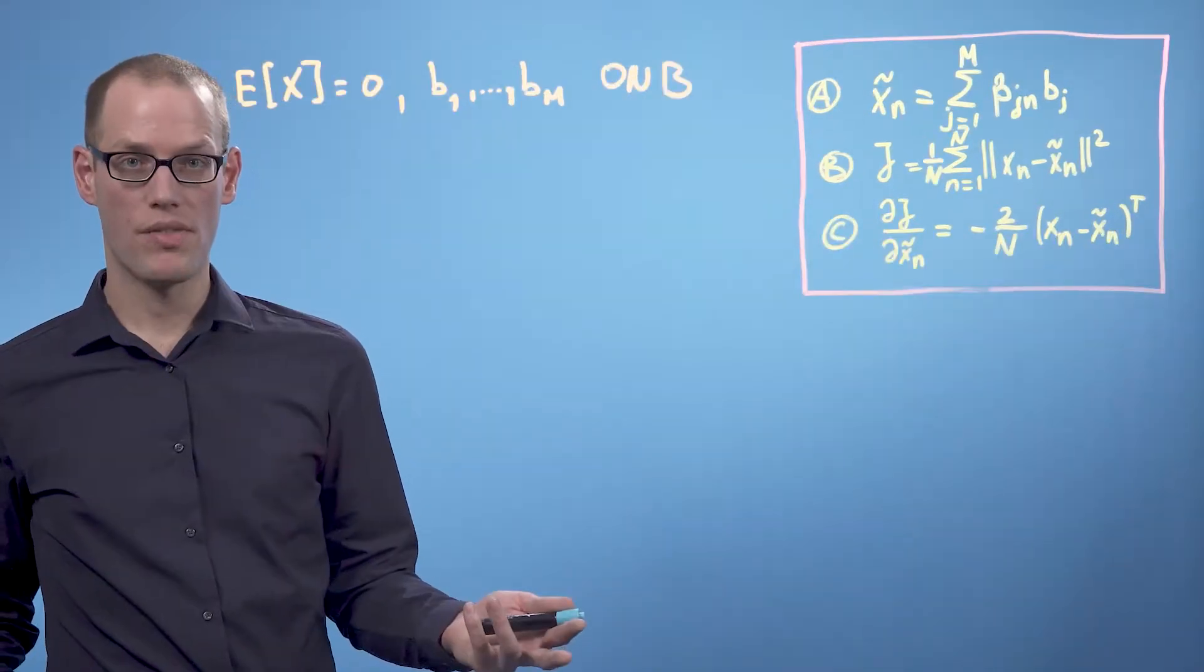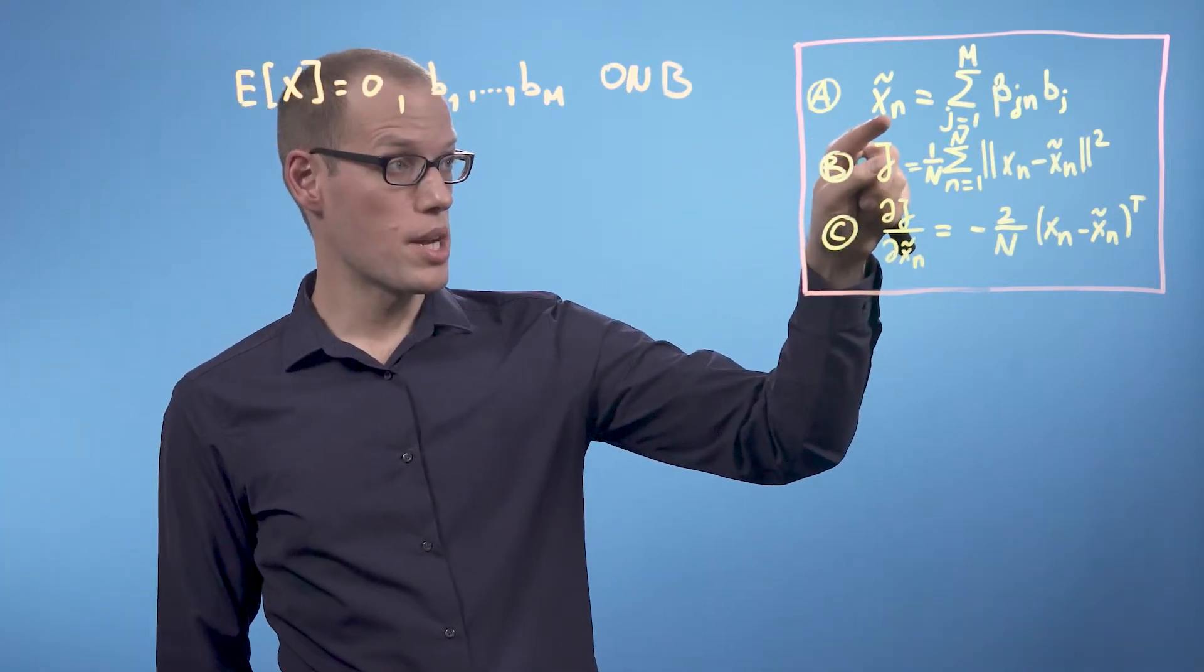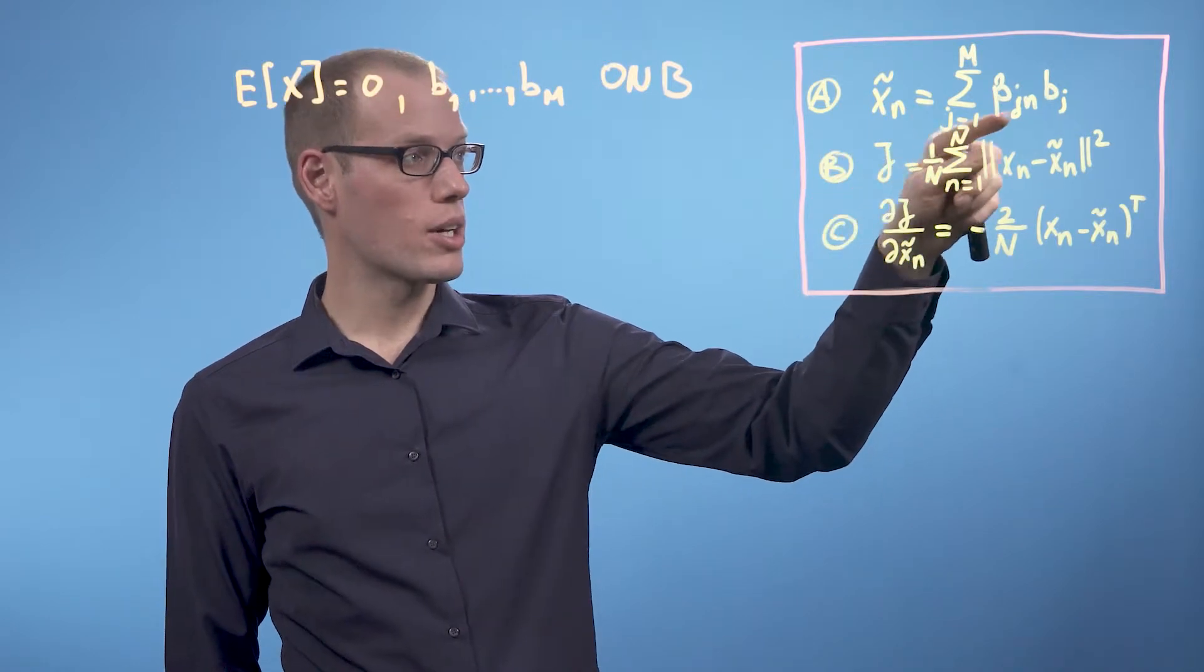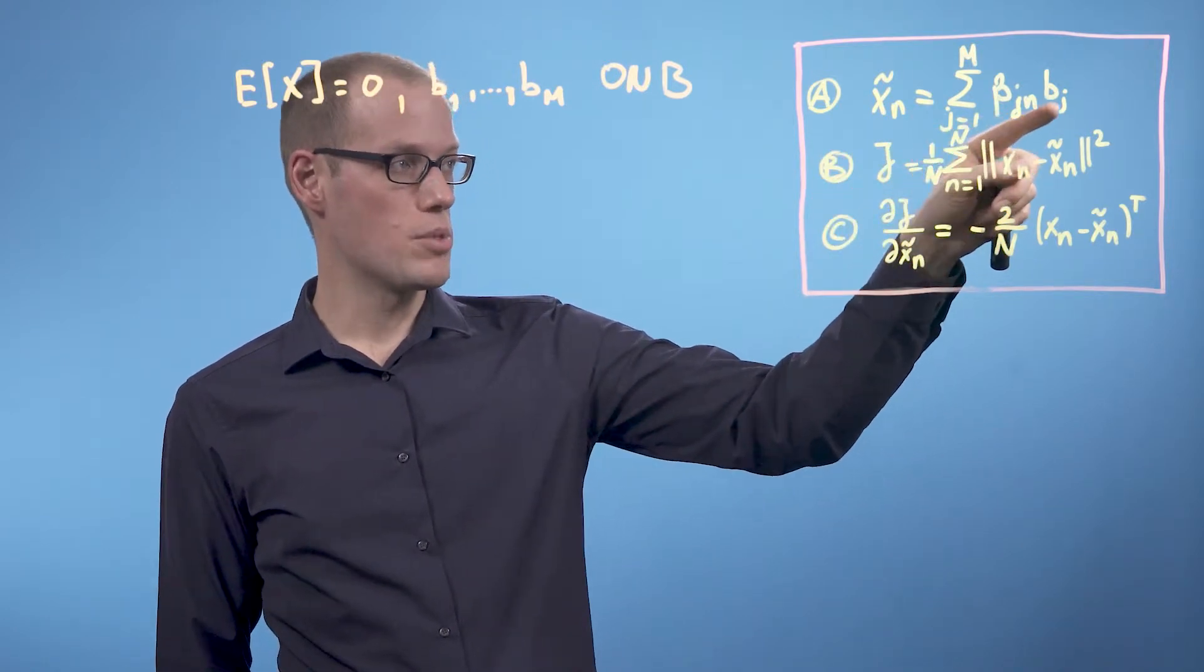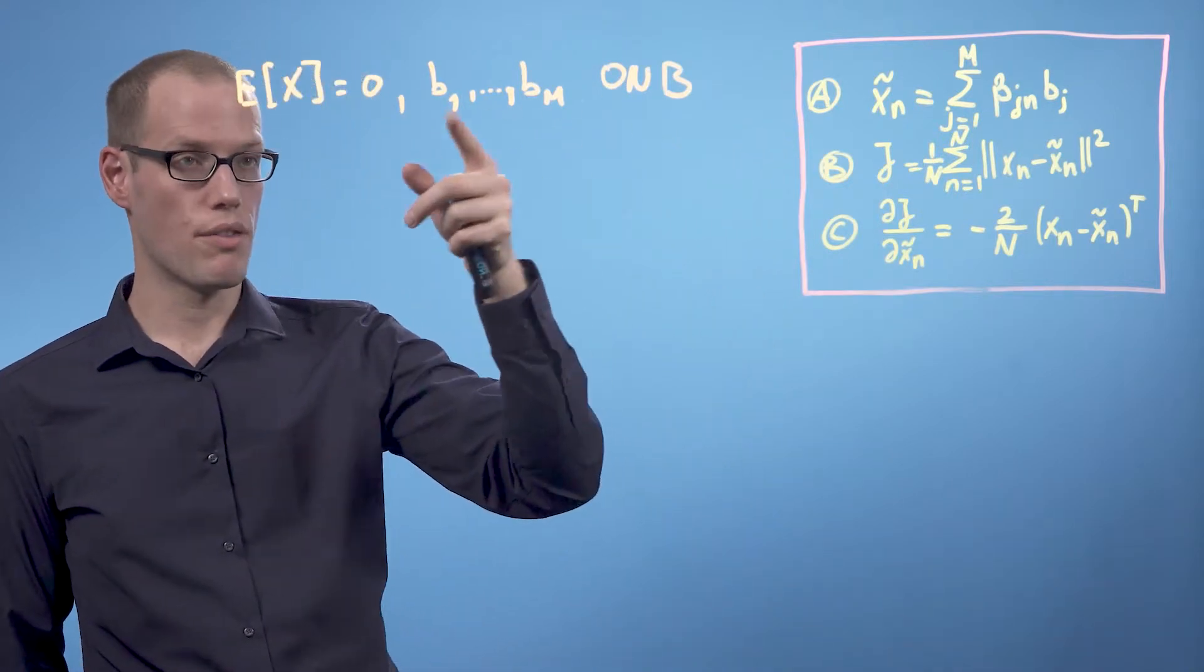From the previous video we carry over the following results. First we can write our projected data point xn tilde as a linear combination bjn times bj where bj form the orthonormal basis of our subspace.